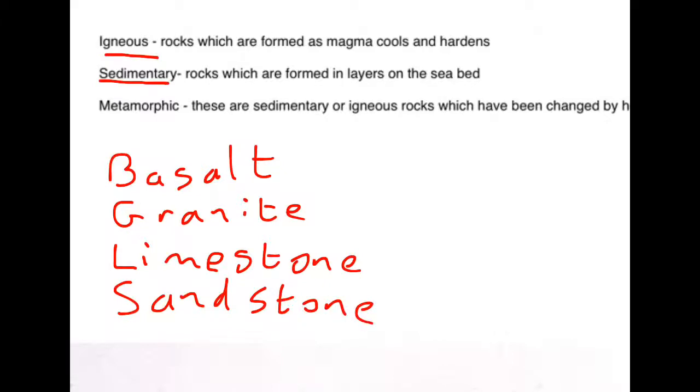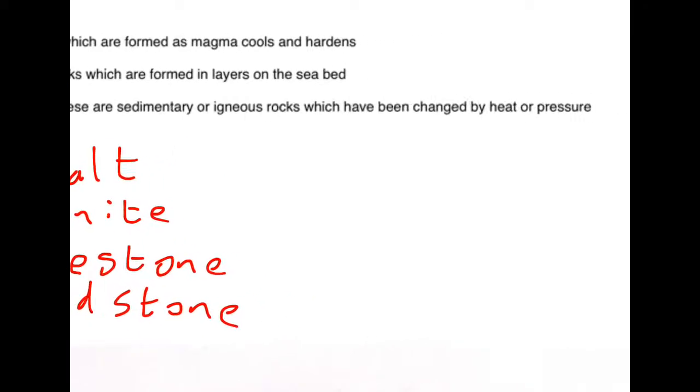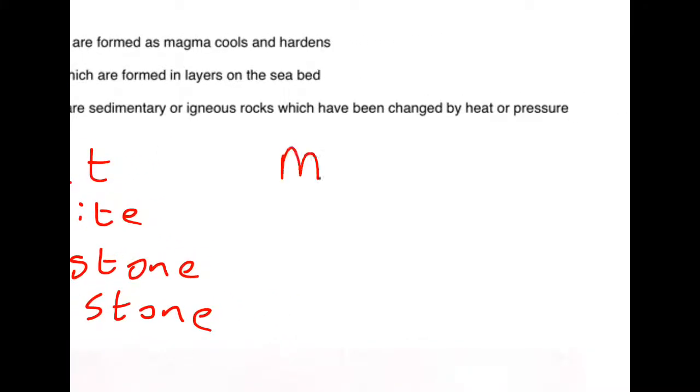The third and final groups of rocks are metamorphic rocks. These are sedimentary or igneous rocks which have been changed by heat or pressure. Two best examples of this rock type are marble and slate.